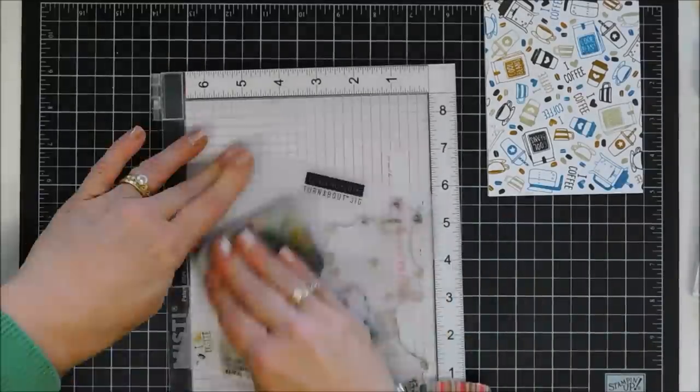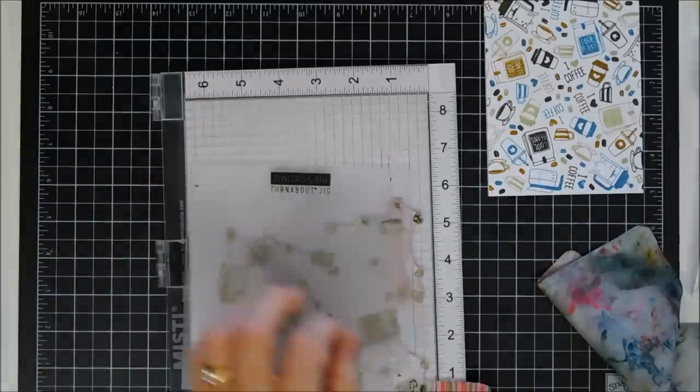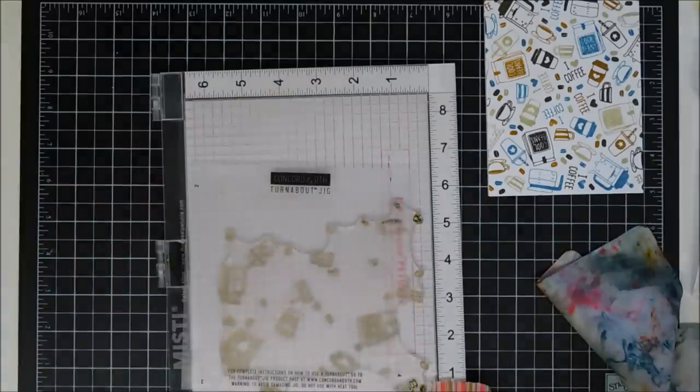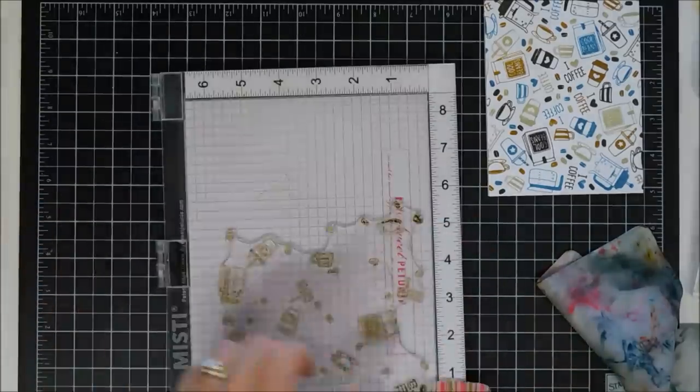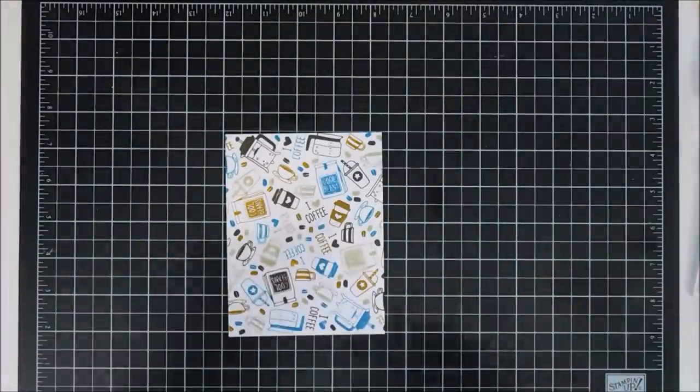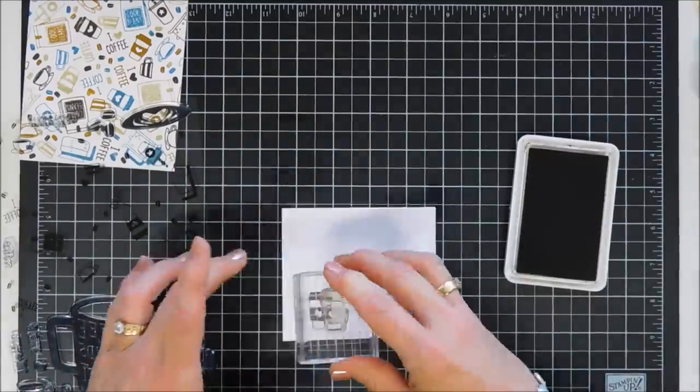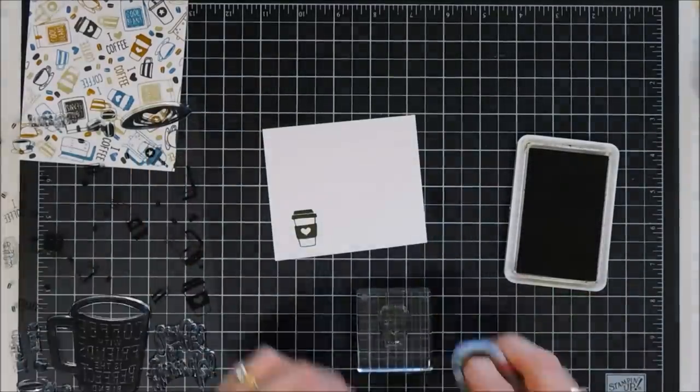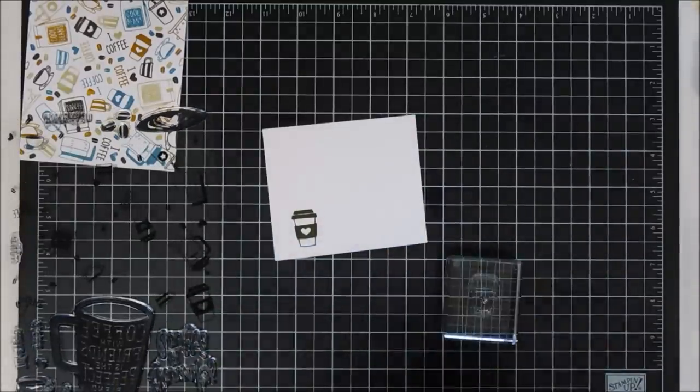The nice thing about the turnabout jig is the price point's great too—it's affordable and your ink wipes off easily. Then to remove my tape I just use my sponge eraser. Now we're going to do some more stamping. I'm going to stamp the coffee mug with the dark brown ink that we use for our background.